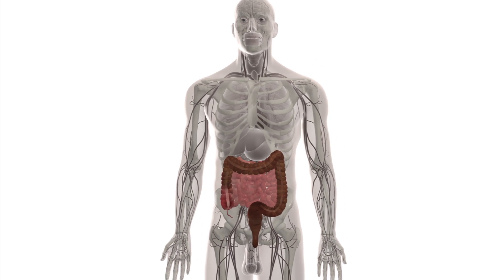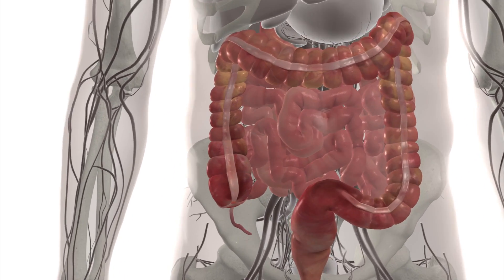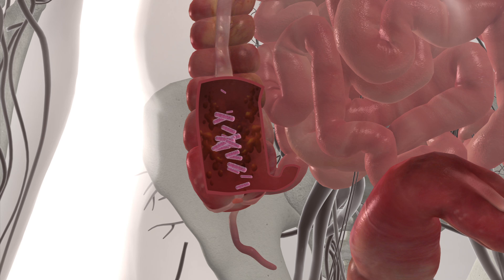It involves an enema procedure that injects a healthy donor's faeces into the patient colon so that the patient can regain healthy gut flora and clear up the symptoms of C. diff.